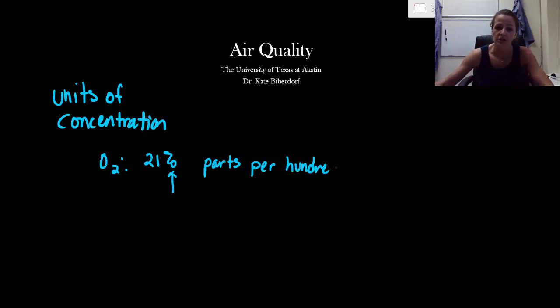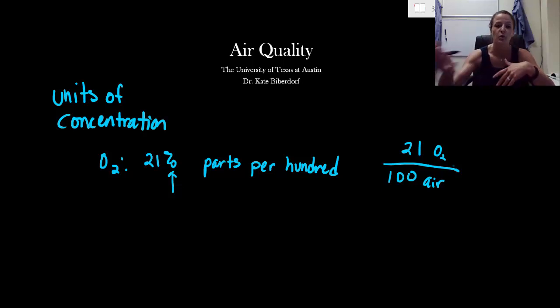So if I challenge you to take 21% and write it out into a fraction term, hopefully most of you would be able to come up with this term, 21 out of 100. So what we're saying is out of every 100 pieces of air, 21 pieces of those are oxygen. It's just a fraction, a relative fraction. I could also say I have 21 blue socks out of every 100 pairs of socks that I have. It's just a ratio and an easy unit for us to communicate from human to human without saying 21 out of every 100. We can just say it's 21%.